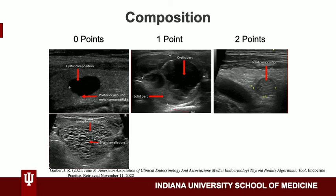In the first category we will be looking at what the nodule is composed of. If its composition is cystic or spongiform in appearance it gets zero points. If it has both cystic and solid appearance it gets one point. And if it appears mostly solid it gets two points.